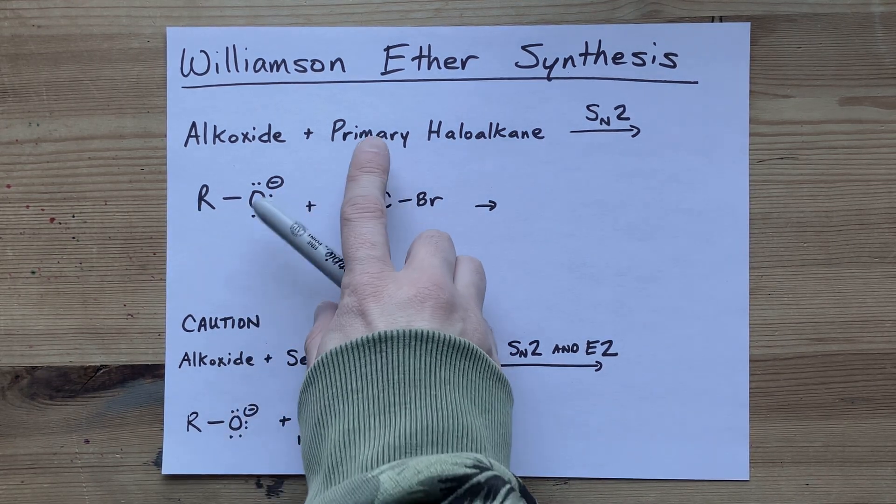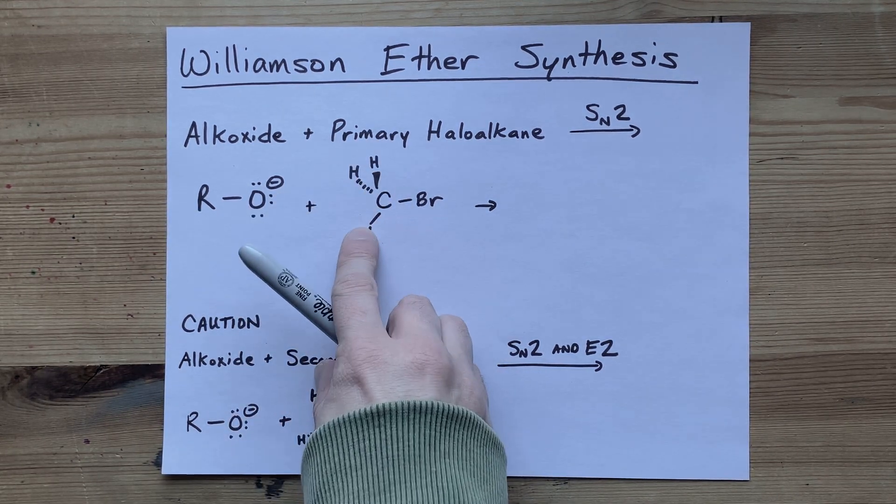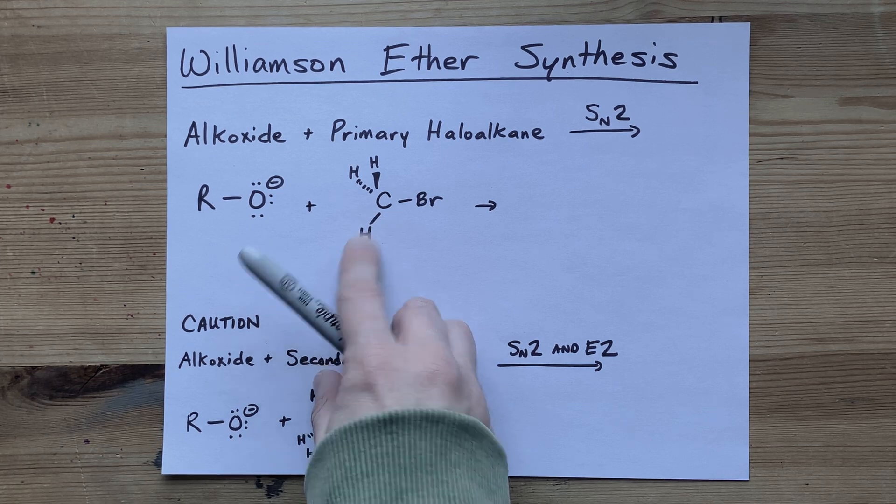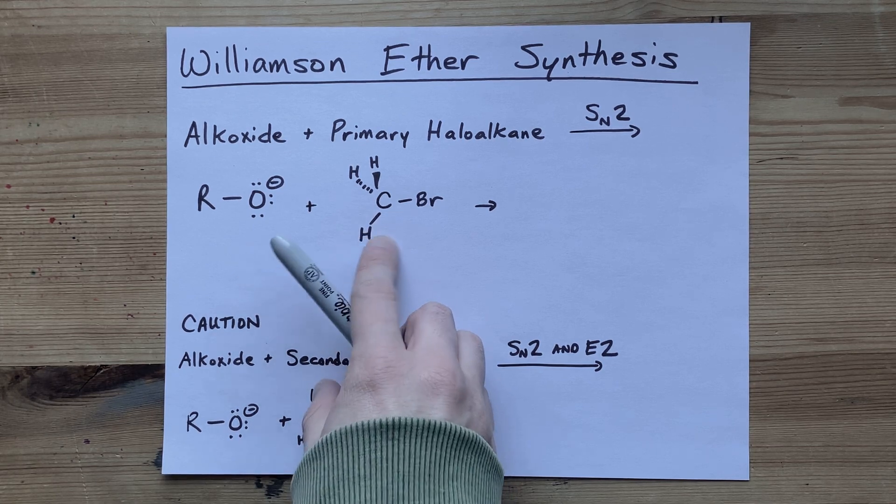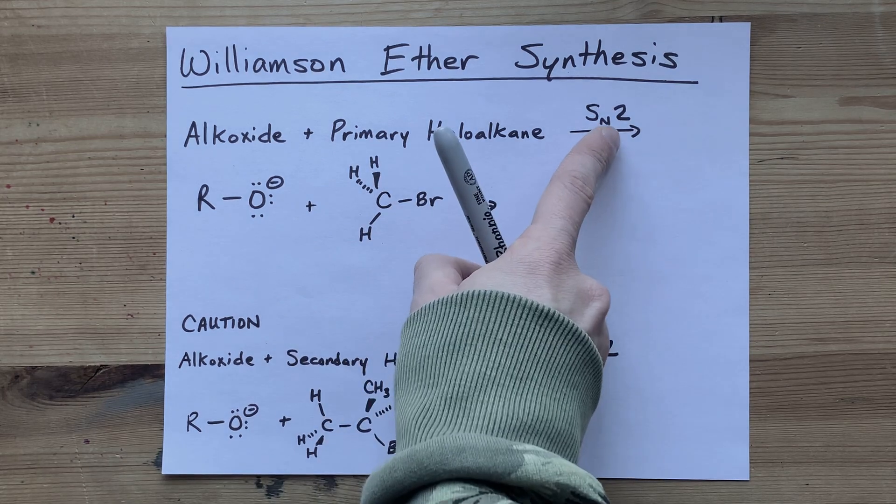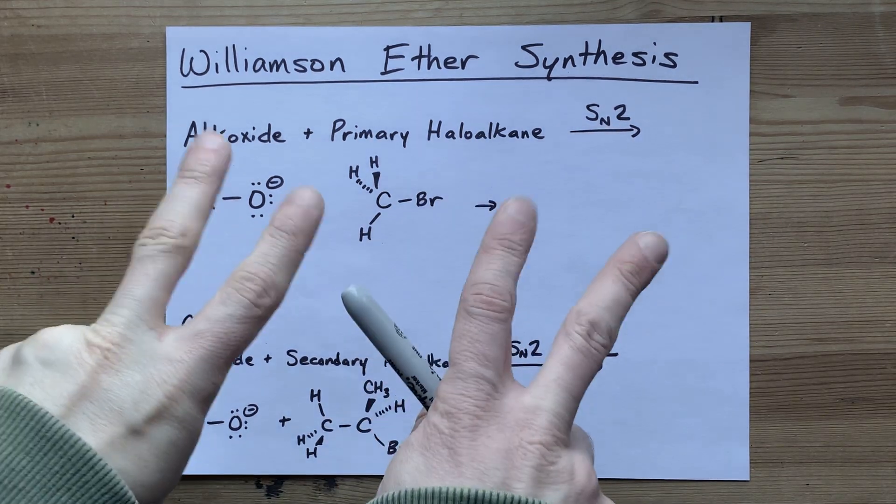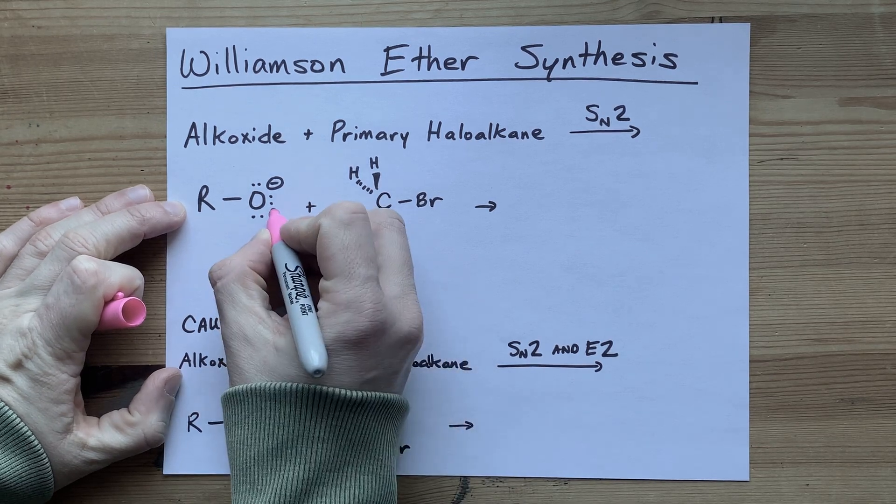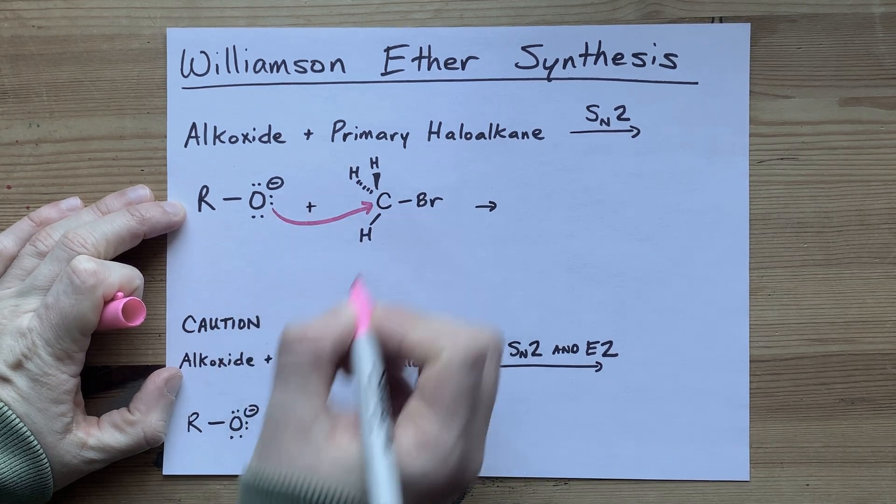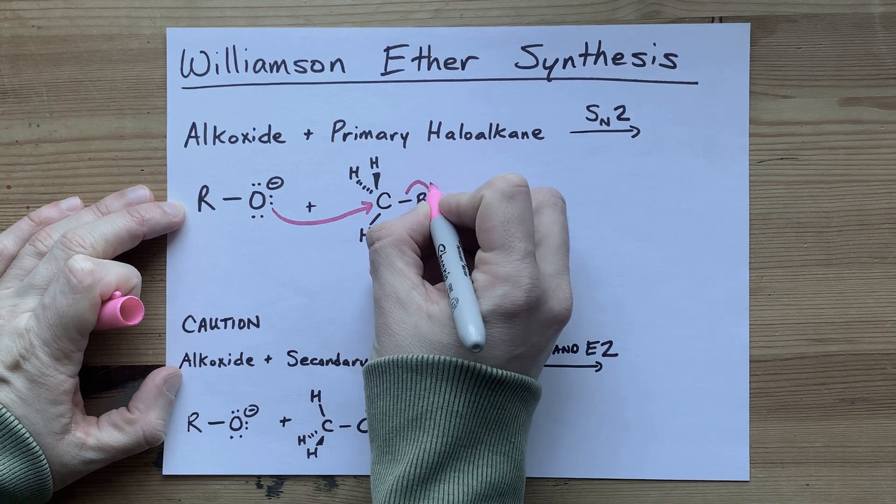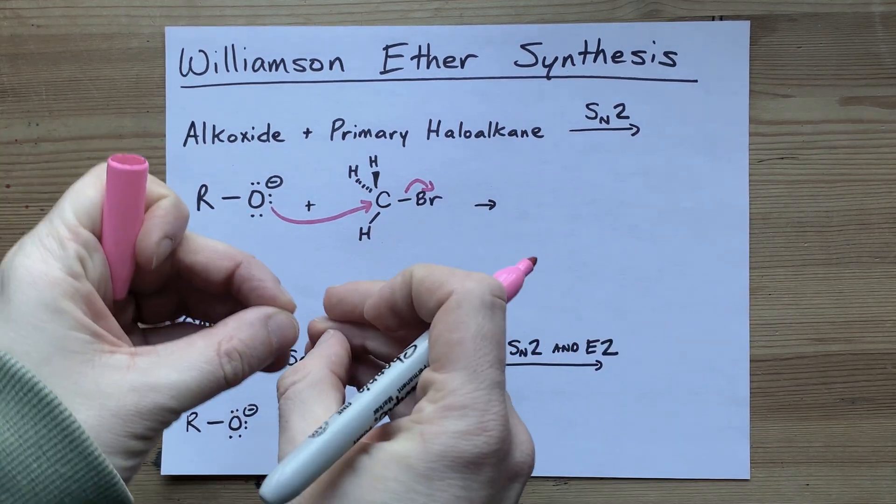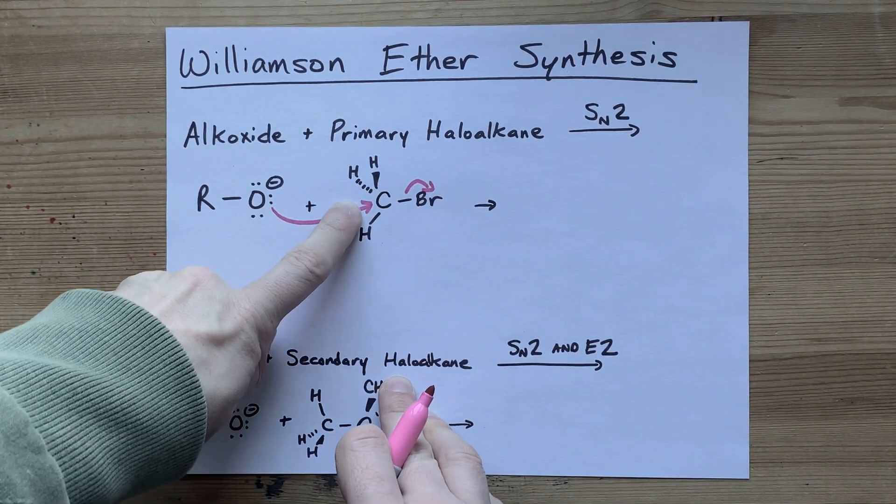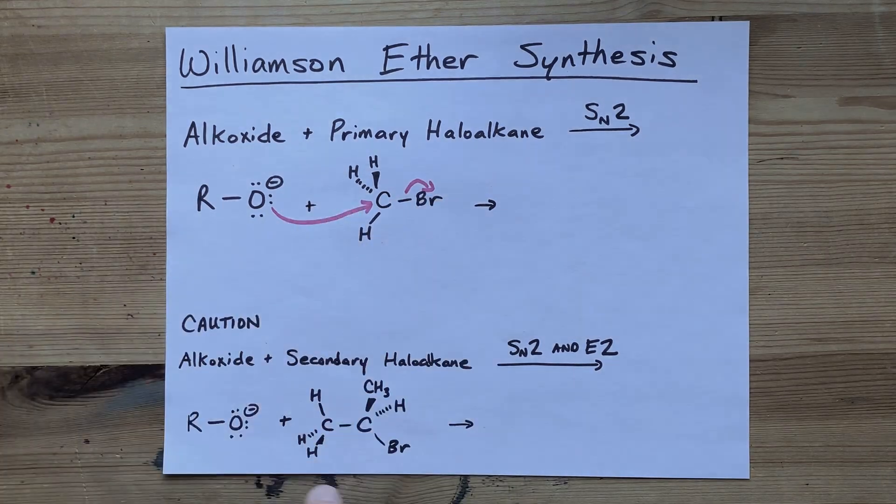The reason it needs to be primary, as in only one carbon-carbon bond here or none, is because this reaction happens via SN2, which is called the backside attack. The negative charge on this alkoxide is what attacks that carbon and forces the bromine to come off of it. This is a concerted mechanism where this is attacking at the same time as the bromine is leaving.